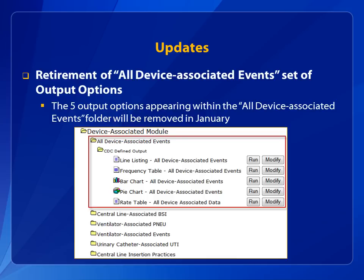We understand that some may use the All Device-Associated Events output options in order to see all related data in a single report. Custom output sets can be created so that multiple output options are included in a single run of a report. Instructions for creating a custom output set are available on the Analysis Quick Reference Guide webpage.